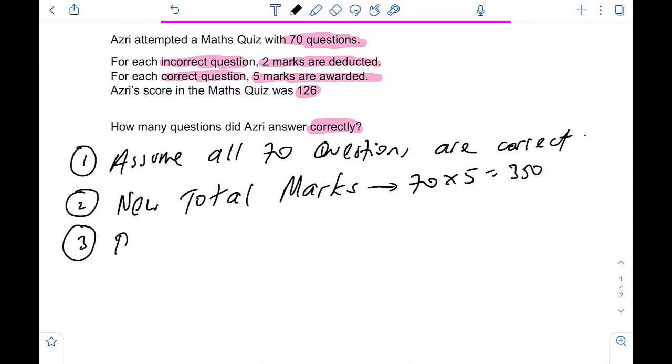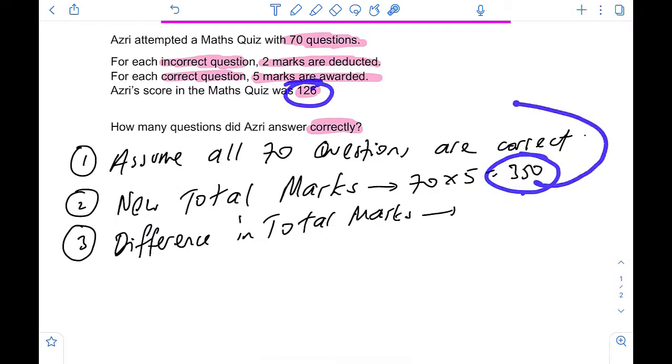Step number 3. Difference in total marks. Now, we know that the marks is not 350. It is actually 126. So what is the difference between these two numbers. 350 minus 126. 224 marks is the total difference in marks.